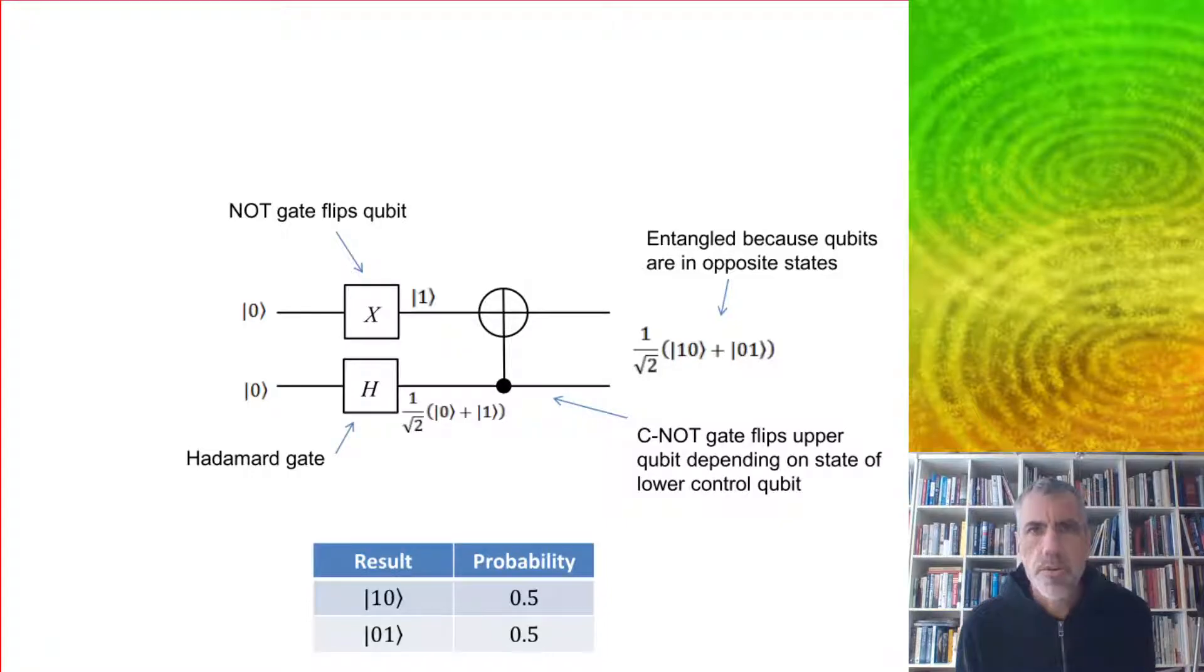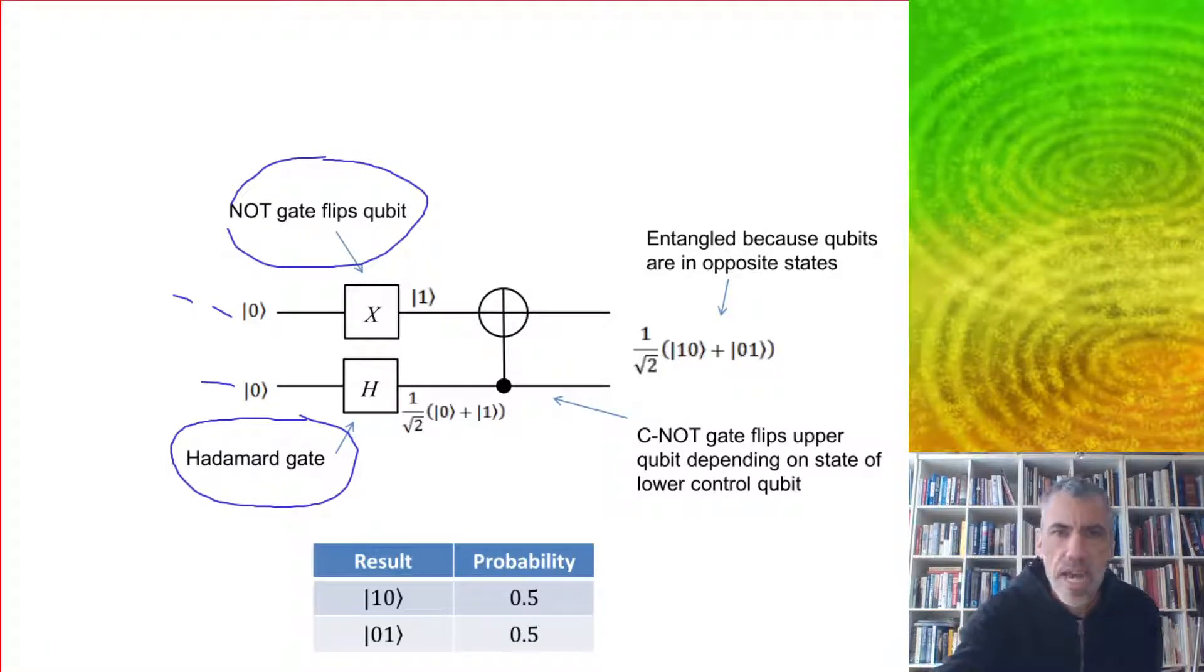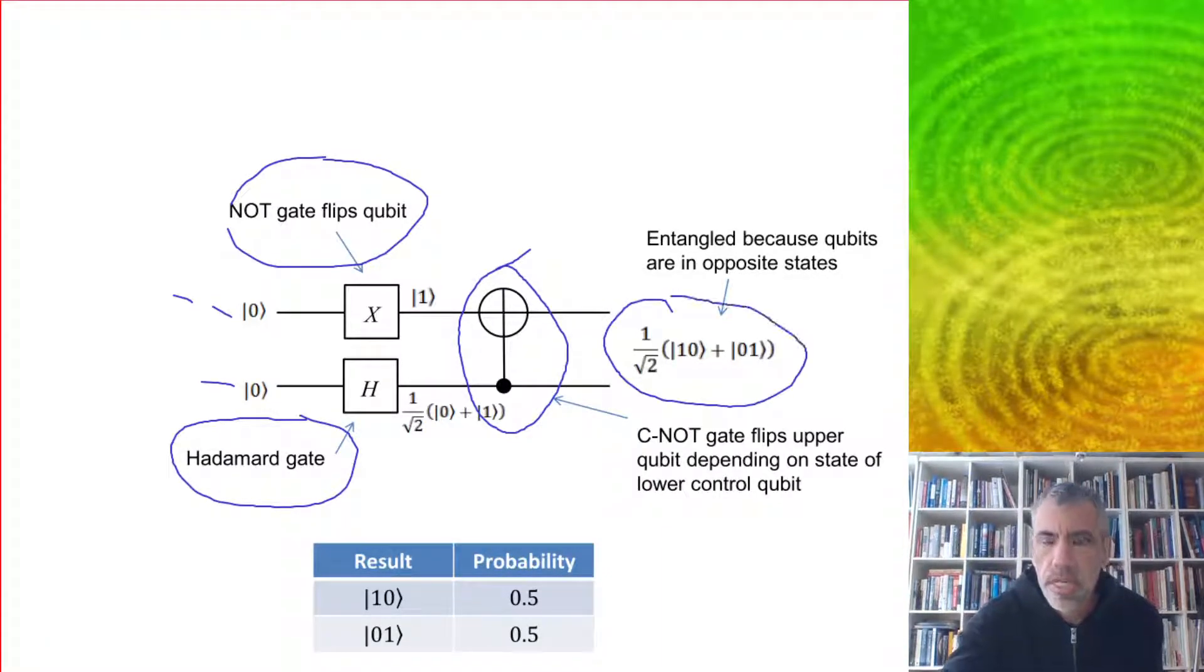We can model this using a quantum circuit. I'm going to have two initialized qubits coming in here on the left, 0 and 0. We've got a NOT gate here which flips the first qubit, symbolizing the creation of a debt. For the debtor, I'm going to use the Hadamard gate, which puts it into a 50-50 chance of 0 or 1. This is going to act as the control. We've got a CNOT gate here with the debtor acting as a control, which flips the upper qubit. The outcomes are this thing here, and so this is entangled.